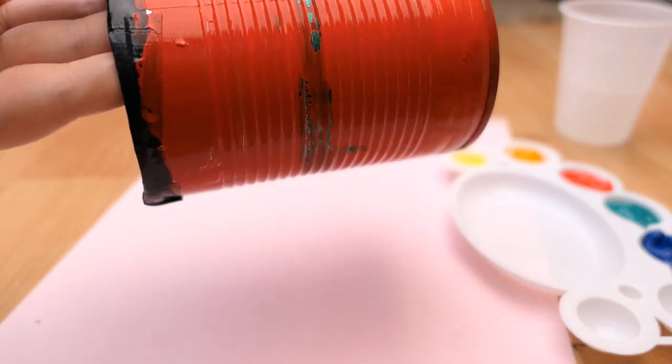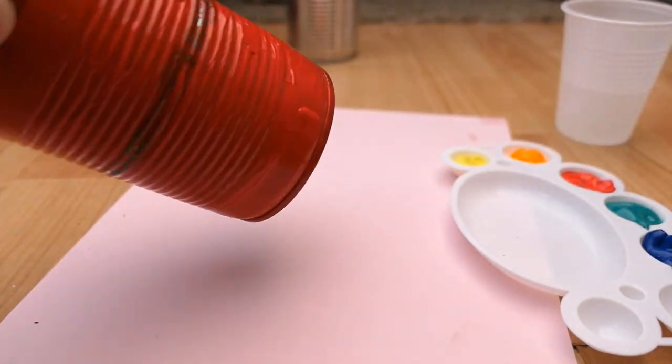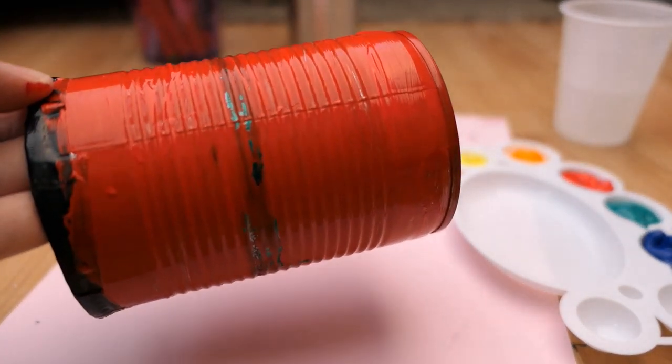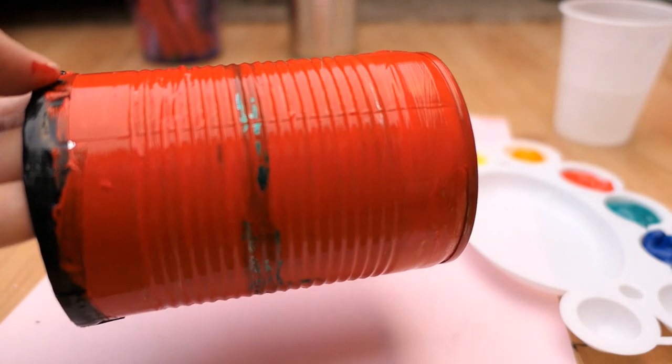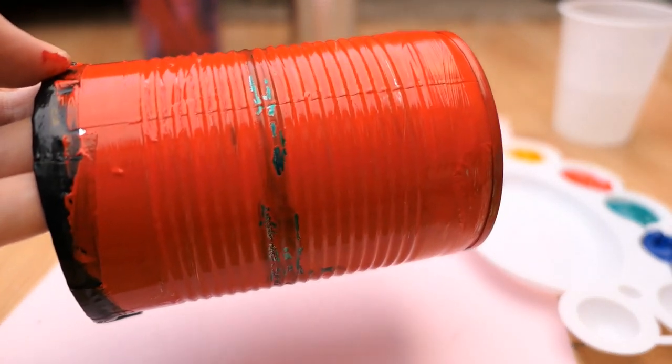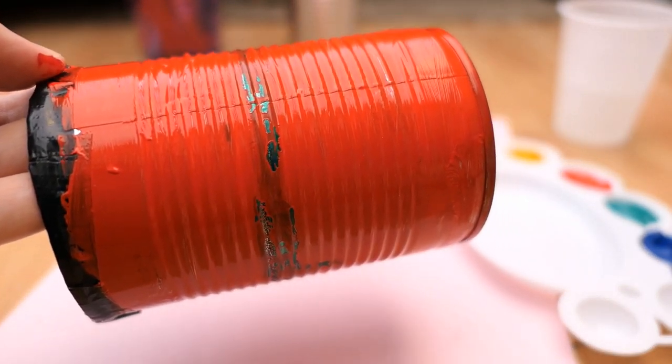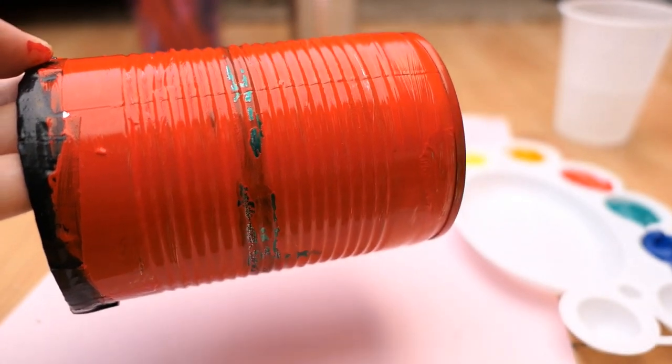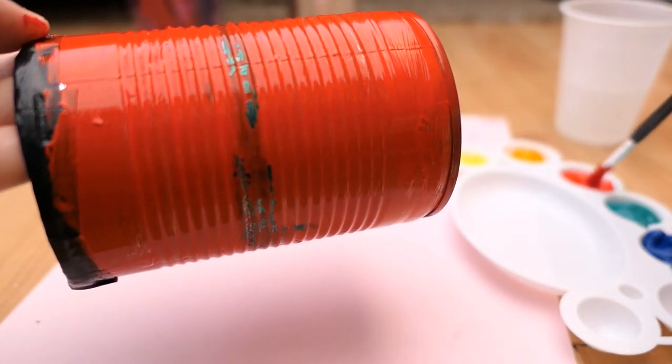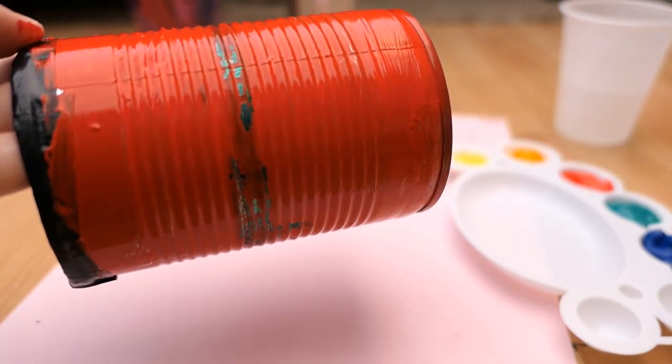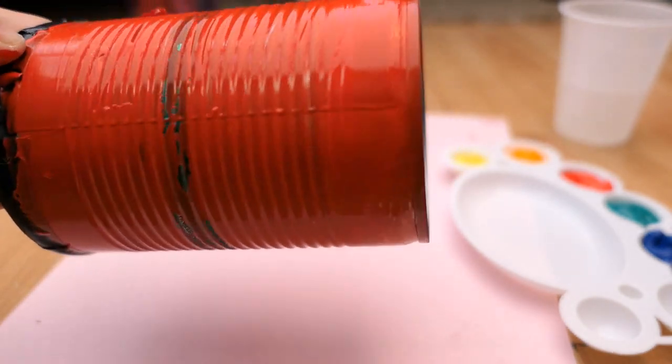Okay, so I've painted all the way around the tin can. So you can get these tins from like baked beans or mangoes or whatever is in your cupboard, or soup. So if you don't have one then why not have some soup today and then you can make one of these cool things.